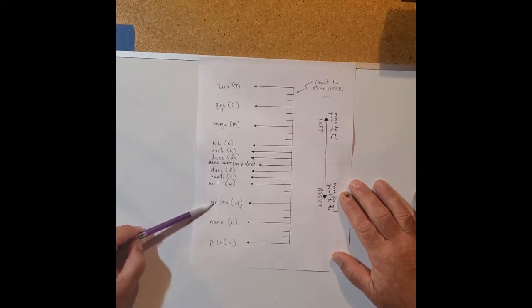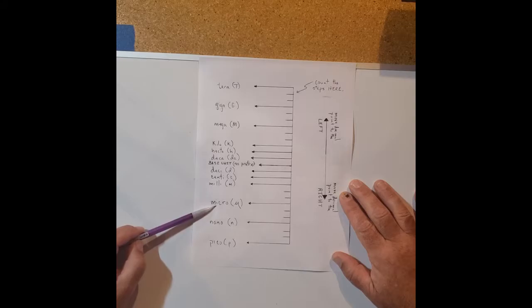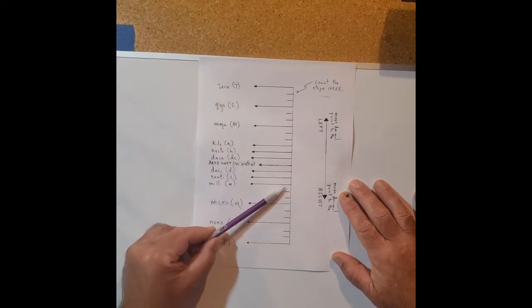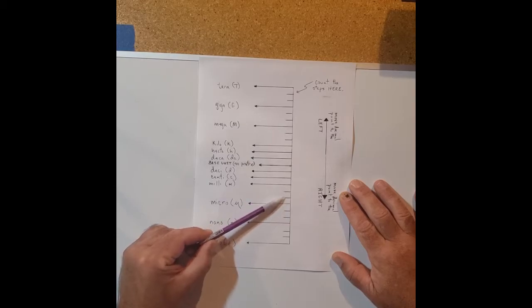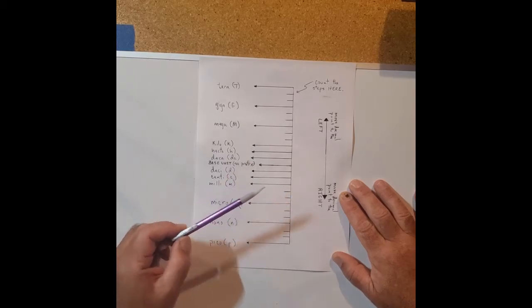The same is true for the prefixes below milli. Milli is a thousandth, micro is one millionth, but it's not a ten times difference, that's a thousand times difference. And again, for that reason they're spread out on this metric ladder.